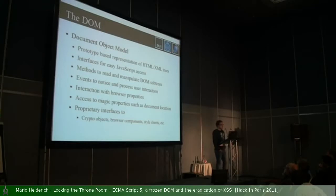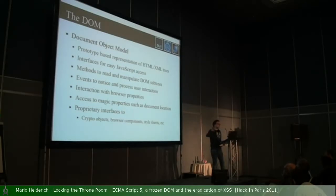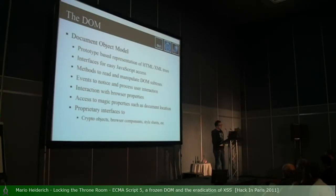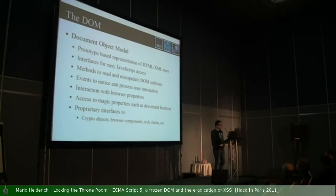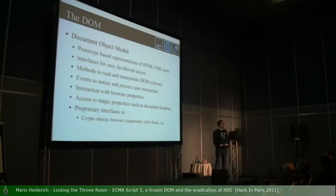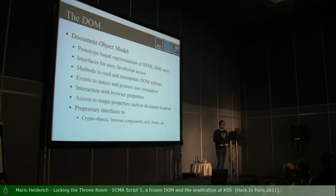The DOM also provides an interface for dealing with events — for example, a mouseover event firing to turn an element green when hovered. The DOM also allows interaction with browser properties such as the navigator object, where you find the user agent string, and the screen object for screen resolution. Some of these objects are kind of magic and do not behave like other objects. One of these horribly magic objects is location — you can say location.href equals something and a redirect happens, or just location equals something.